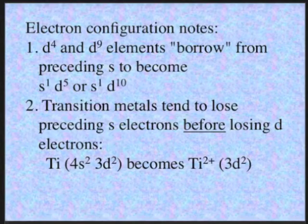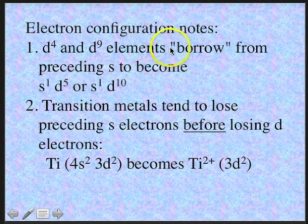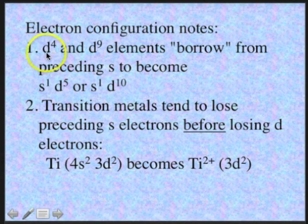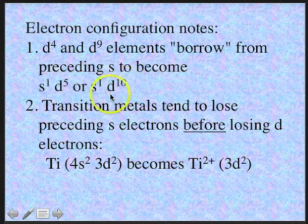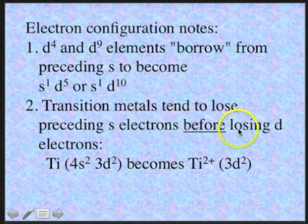A couple of notes on electron configurations. First, if you have a d4 or a d9 element, those are going to borrow from the preceding s orbital to become s1d5 instead of s2d4, or s1d10. Second, transition metals tend to lose preceding s electrons before losing d electrons.